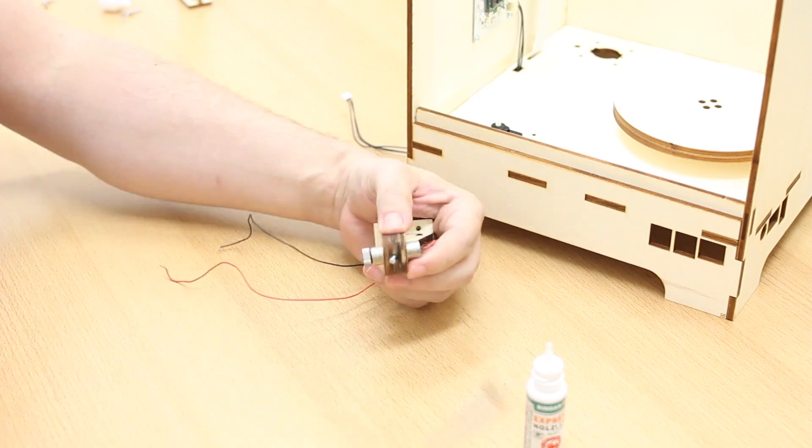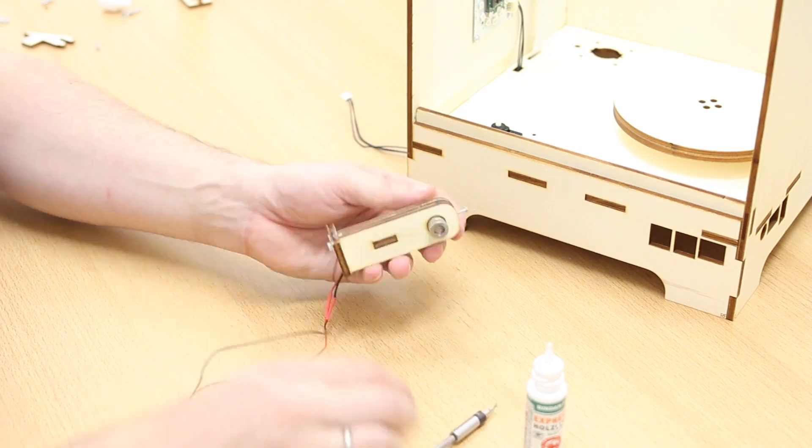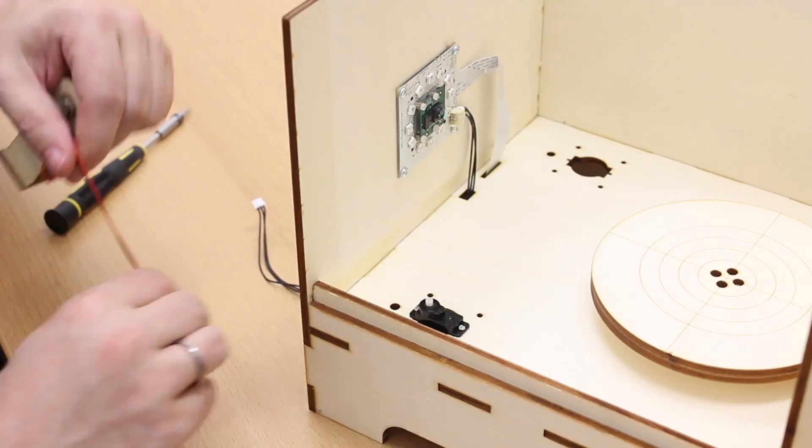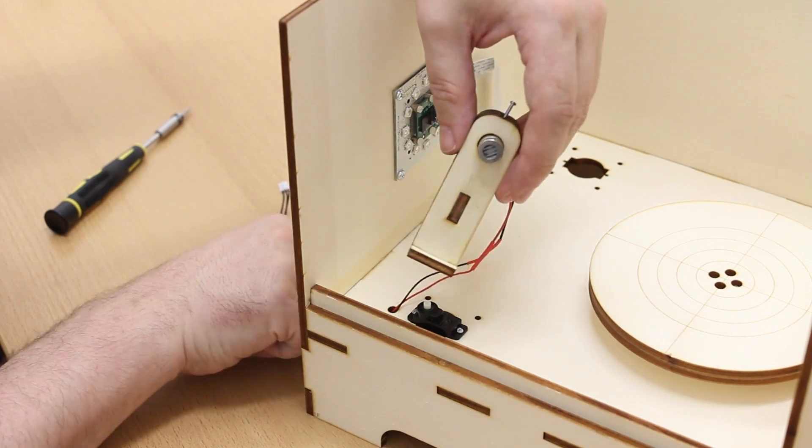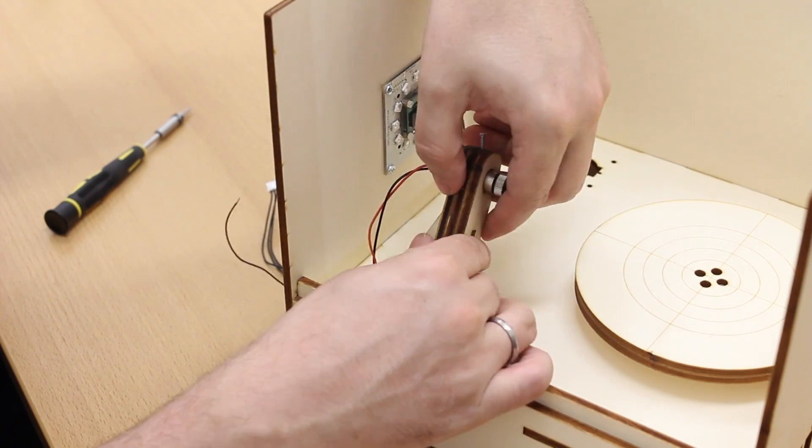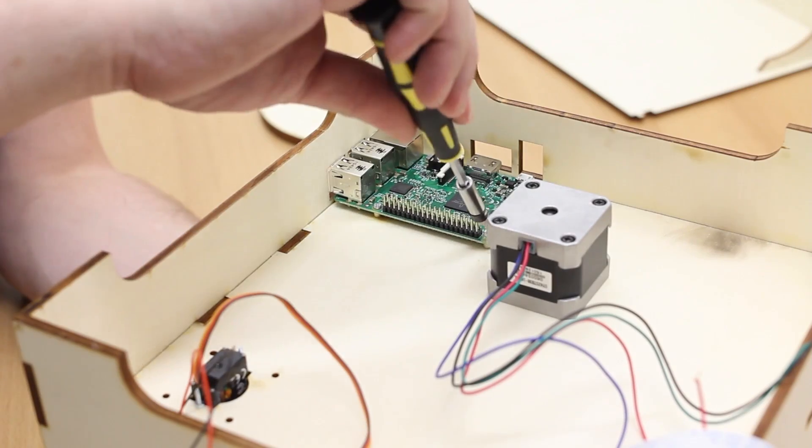And use the screw for fixing it. Then put the wires through the hole and add the plastic gear to the servo. Done.